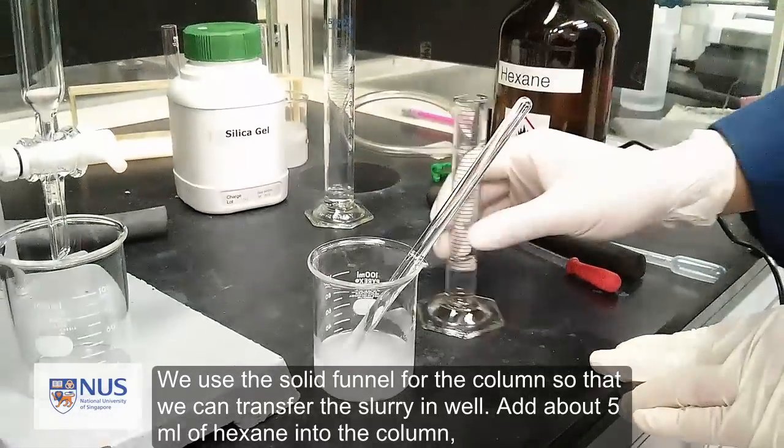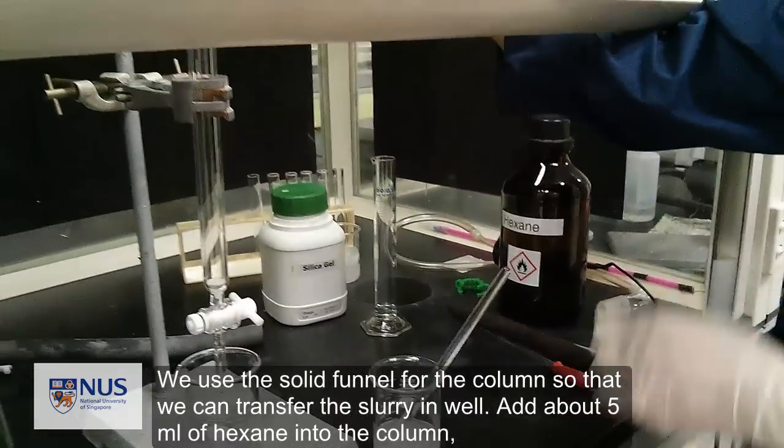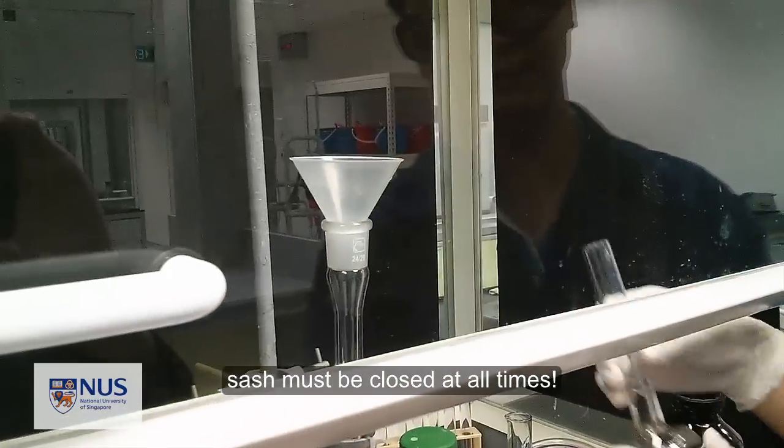Add about 5 ml of hexane into the column. At all times, the sash must be closed.